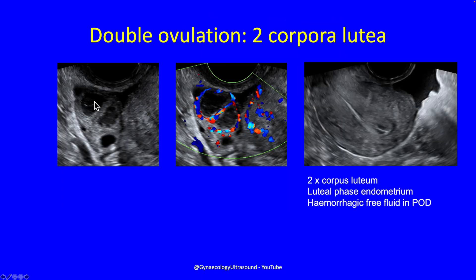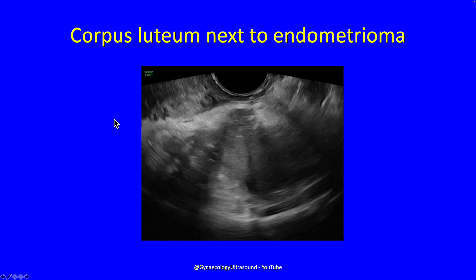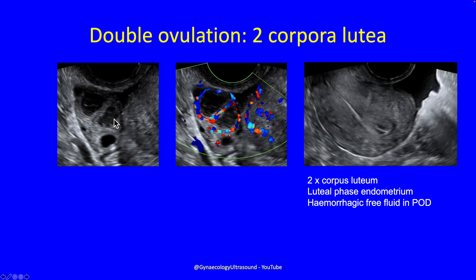In this case, it's not quite clear — there's been some haemorrhage, but what is it? When you put the color Doppler on, you can see that this is a double corpus luteum, and that the endometrium is in the early luteal phase, and there is some physiological haemorrhagic fluid in the pouch of Douglas, all indicative of recent ovulation.